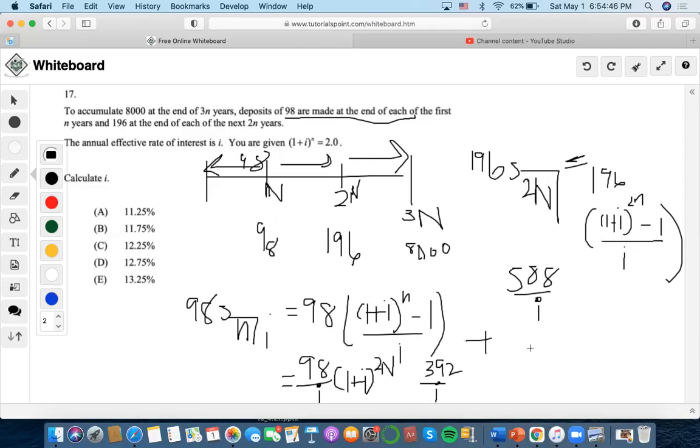So 588 plus 392, we get 980 over I, which accumulates to 8,000.